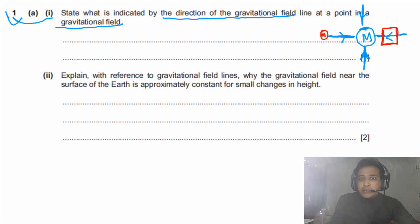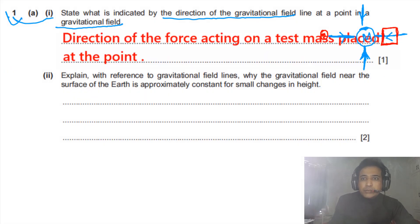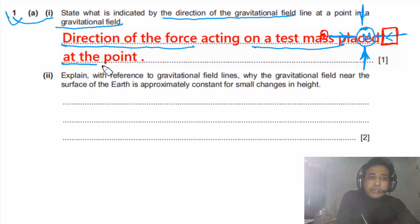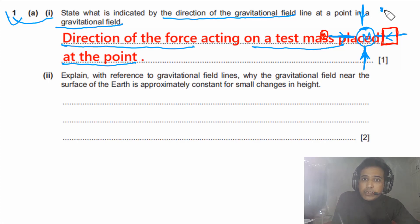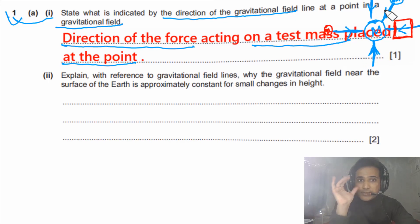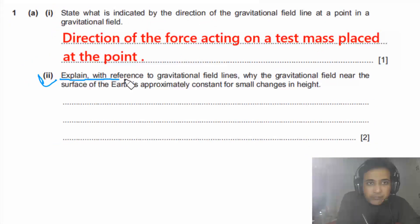To write the answer: the arrow represents the direction of the force acting on a test mass placed at that point. For example, if we place a test mass at a given location, there will be an attractive force on it, and the arrow shows the direction of that force.